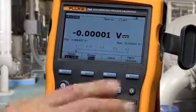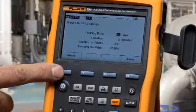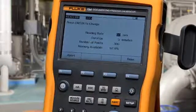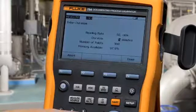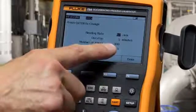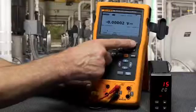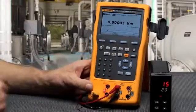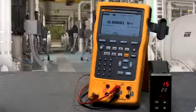To do logging measurements, select more choices, select log, enter the number of points that you want to log, say 60, the number of minutes, and that calculates the number of points based on that reading rate over that period of time, done, and then start logging, and it will log those measurements to memory so you can upload them later to a PC.